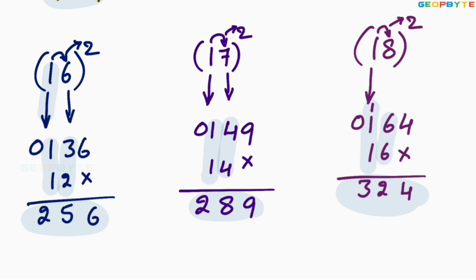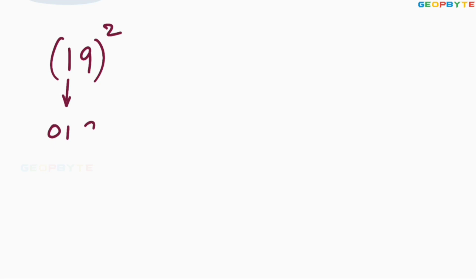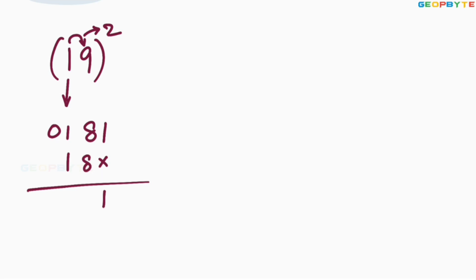Similarly, let us take the 19 square. 1 square is 01, 9 square is 81. Multiply 1 with 9: 9 into 2 is 18. Leave the first space, write 18 here. Add these two values: 1, 8 plus 8 is 16 — write the 6 here, 1 is carry forward. 1 plus 1 plus 1 equals 3. Therefore, 19 square is equal to 361.